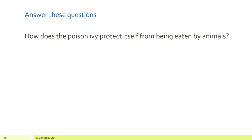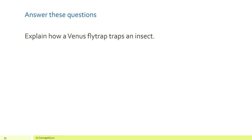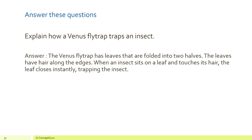How does the poison ivy protect itself from being eaten by animals? The poison ivy plant has poison in it — if an animal touches it, the poison will make the skin itch. How does a venus flytrap trap an insect? The venus flytrap has leaves folded into two halves with hair along the edges. When an insect sits on a leaf and touches its hair, the leaf closes instantly, trapping the insect.